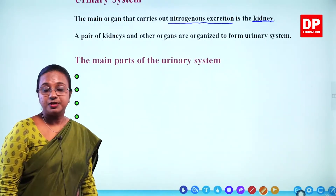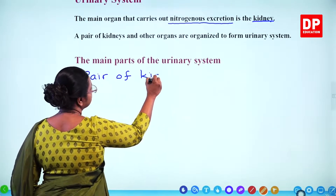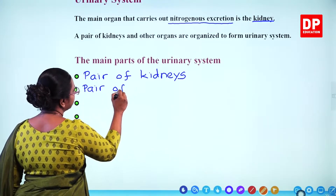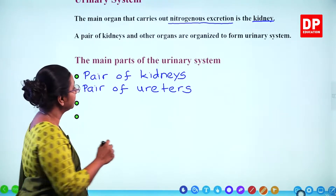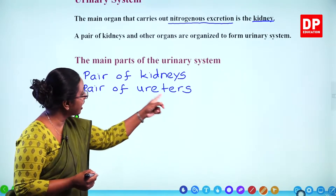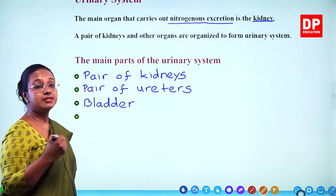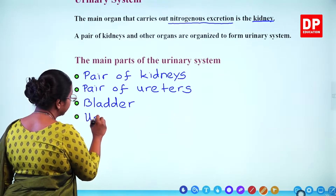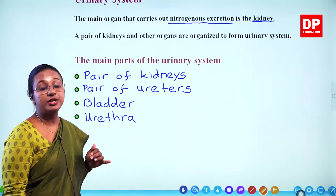The main parts of the urinary system are: a pair of kidneys, a pair of ureters, a bladder, and the urethra. Urine — the main nitrogenous waste product — is produced within the kidneys, transported into the bladder via the ureters, temporarily stored in the bladder, and when the bladder fills up, excreted through the urethra.